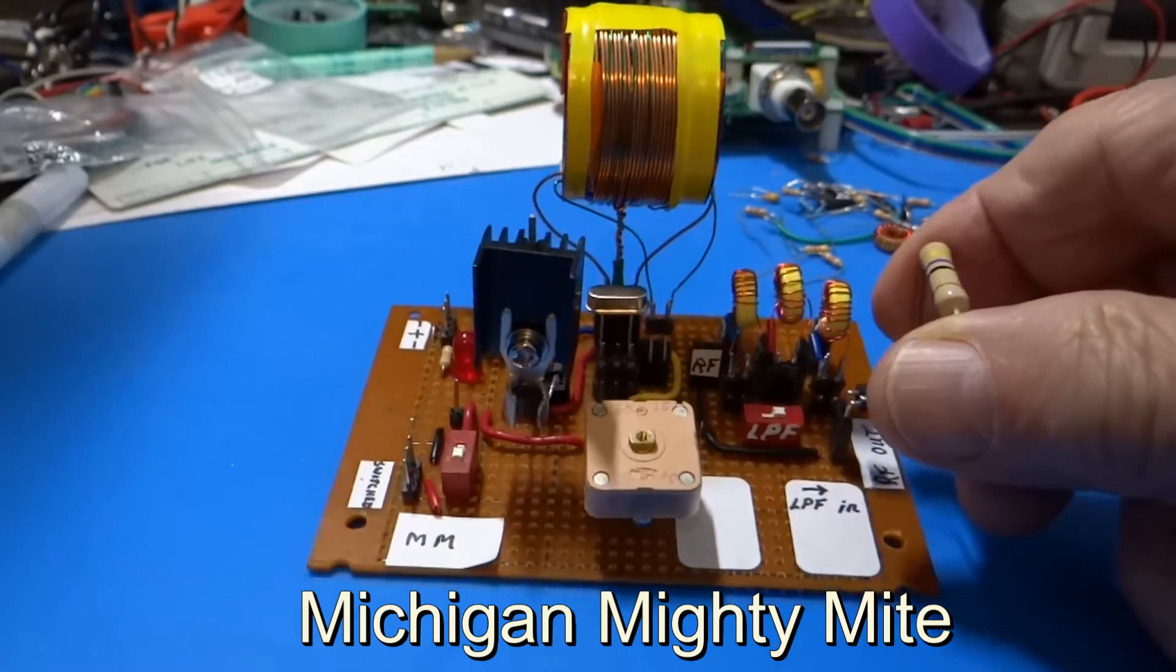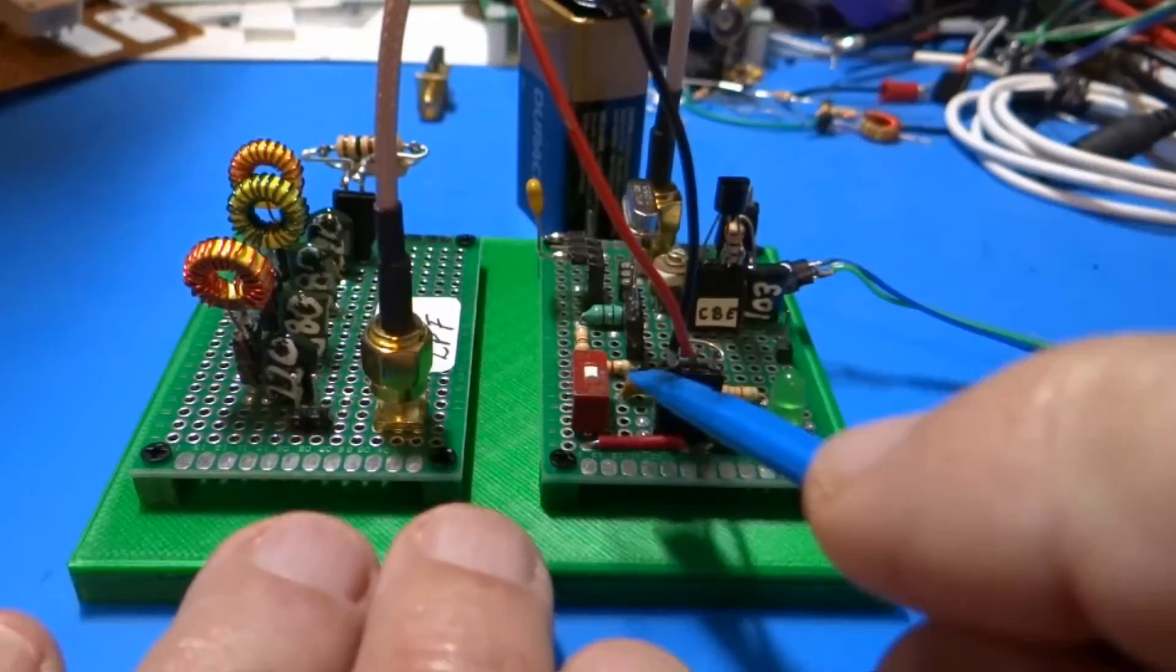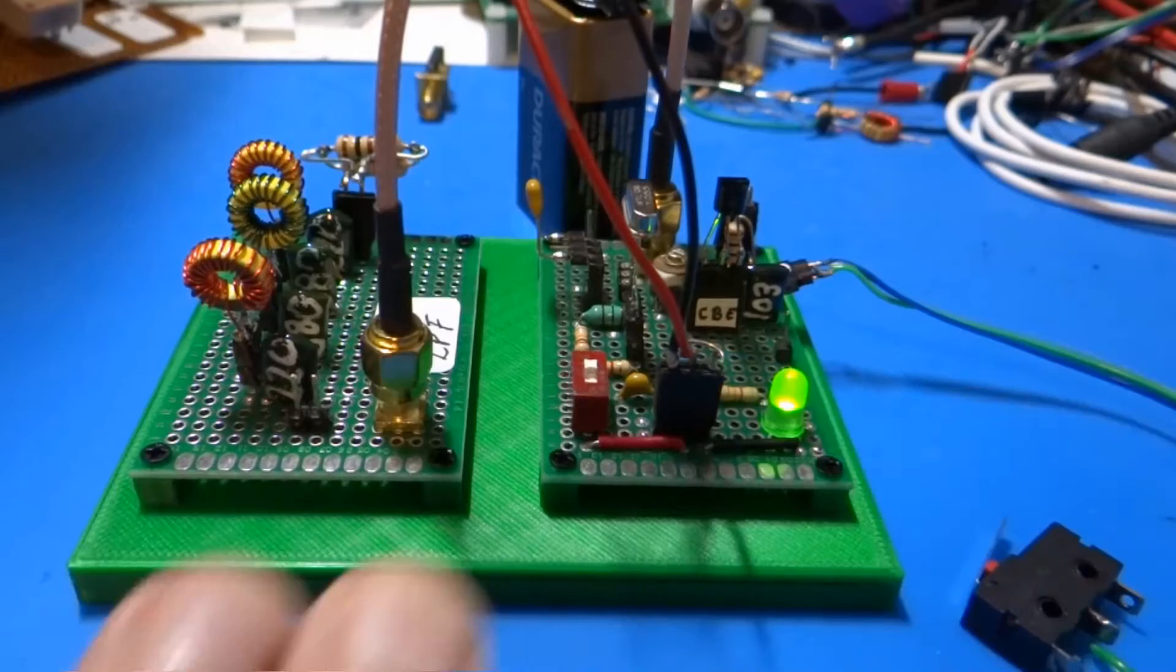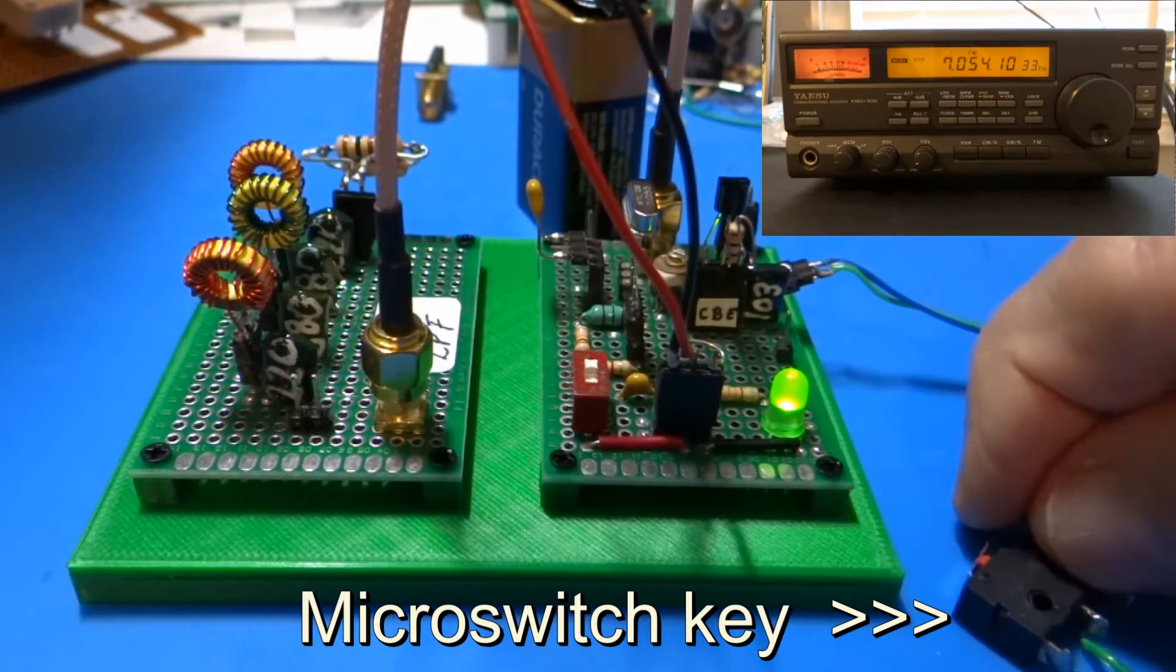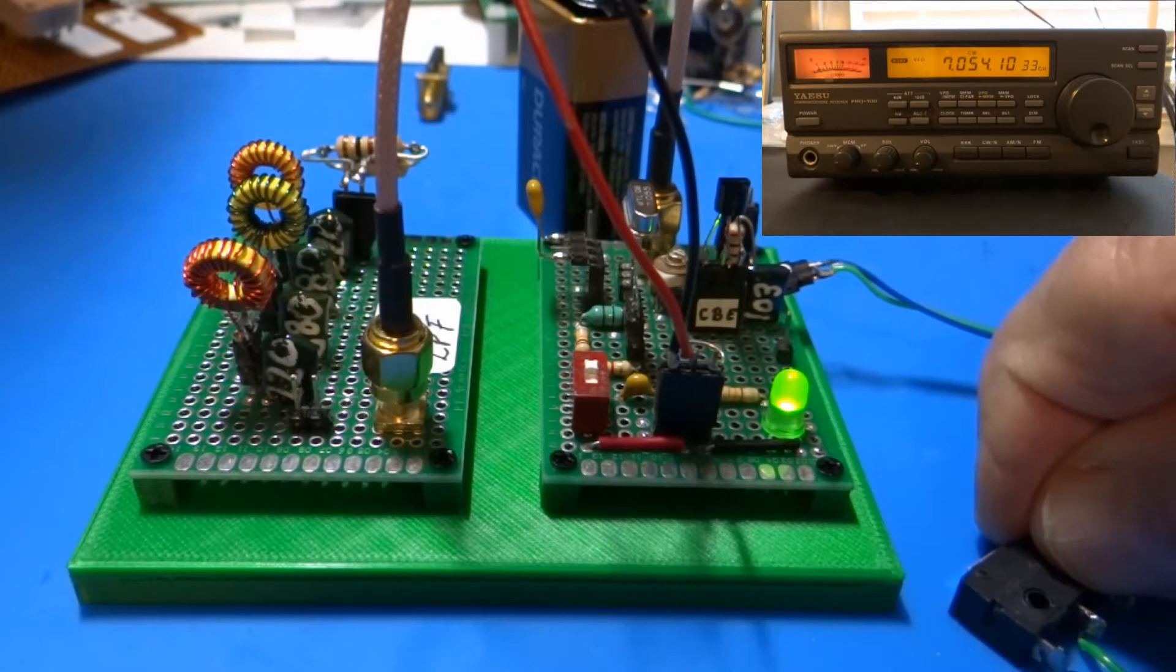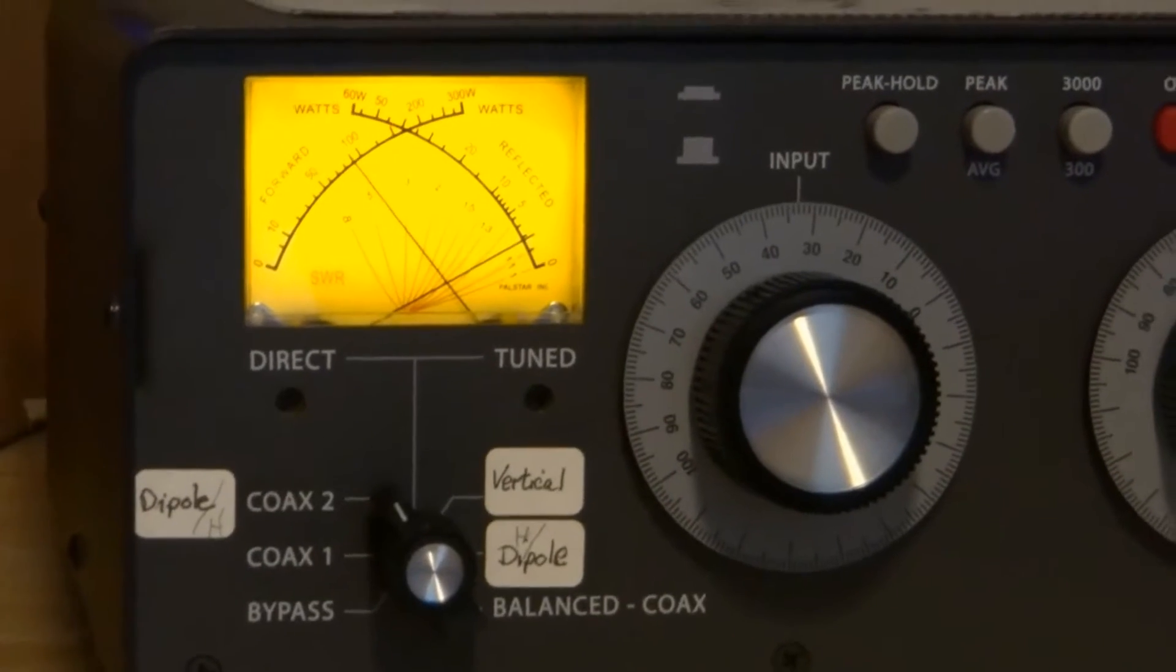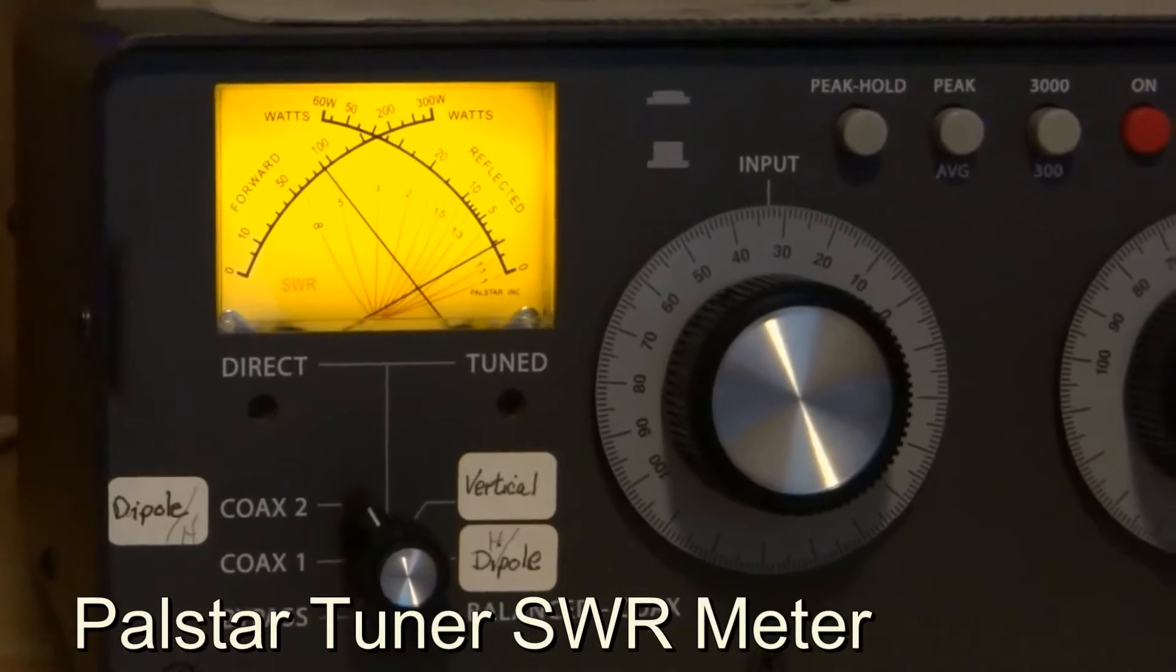While it was easy to tell that they were transmitting simply by listening on a nearby receiver, I wondered if it would be possible to observe their power output with a meter, similar to the way a cross-needle power SWR meter is used with higher power transmitters.